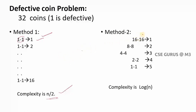In method two, instead of checking one by one, I put 16 coins on one side and 16 coins on the other side of the balance. The defective coin has slightly less weight than the other 31 coins. One side will be lighter, which tells us the defective coin is among those 16 lighter coins — the other 16 are confirmed non-defective.